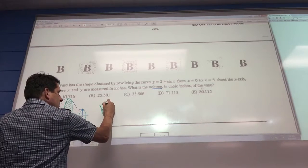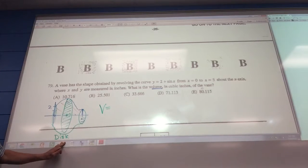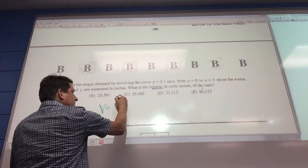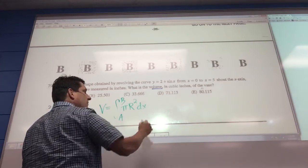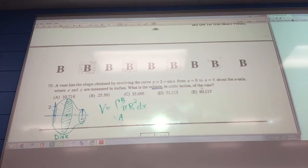So always, when you identify that it's a disk method, write down the formula. Integral from a to b of pi times r squared dx. That's the formula.